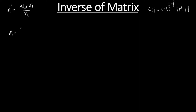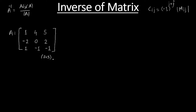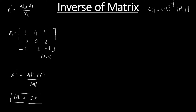Let us take one more example — this time a 3×3 matrix. I am having matrix A with elements: 1, 4, 5 in the first row; minus 2, 0, 2 in the second row; and 1, minus 1, minus 1 in the third row. We are interested to find the inverse of this matrix. If you calculate the determinant of this matrix — referring to my earlier video — for this matrix we got the determinant of A equals 12.